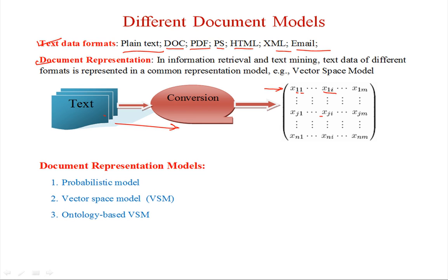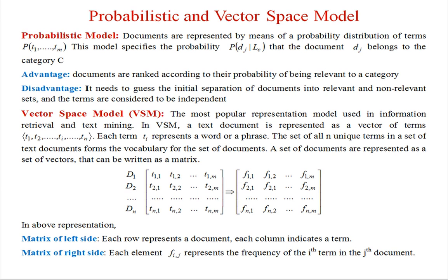There are several document representation models, of which three are more important. The first is the probabilistic model, the second is the vector space model, and the third is the ontology-based vector space model. We will first go through the probabilistic and vector space models.